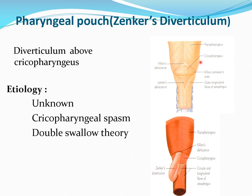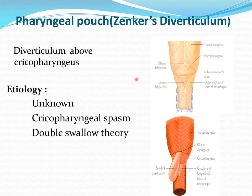There are inferior constrictor striated fibers and cricopharyngeal circular fibers with a gap between them — the Killian's dehiscence or Zenker's space. This is the weakest part of the wall, and pharyngeal mucosa herniates through it behind the esophagus. The etiology is not fully known; the double swallow theory and failure of relaxation of the cricopharyngeus are main causes, leading to cricopharyngeal spasms and increased intrapharyngeal pressure.